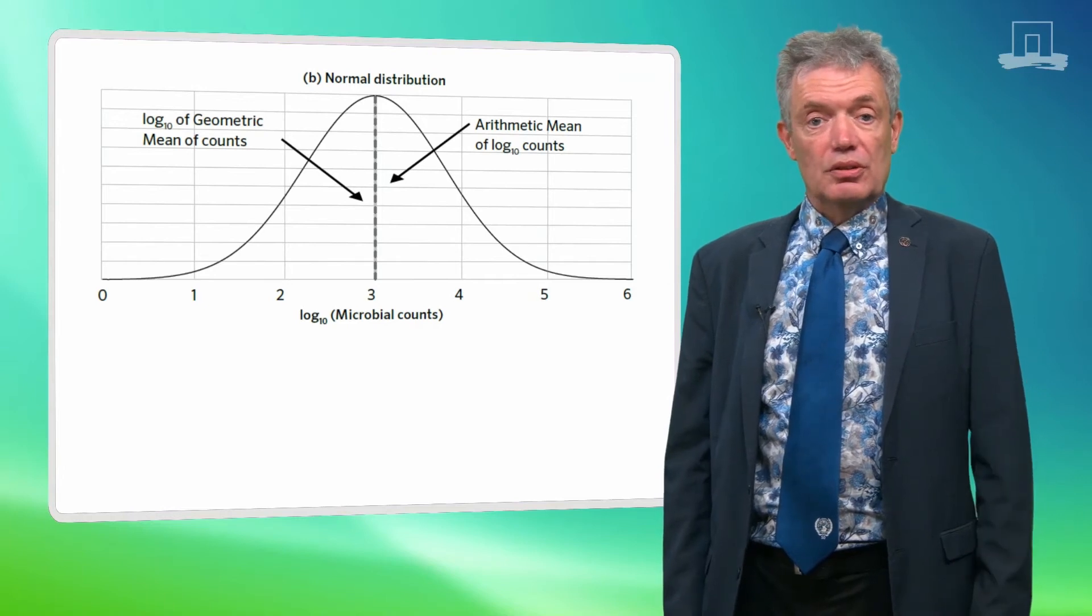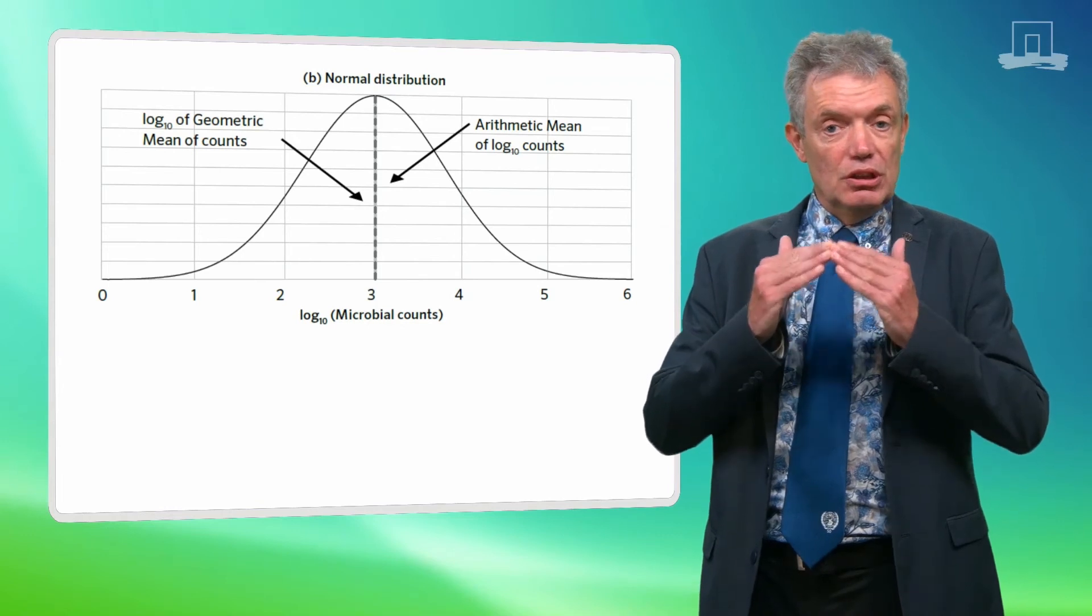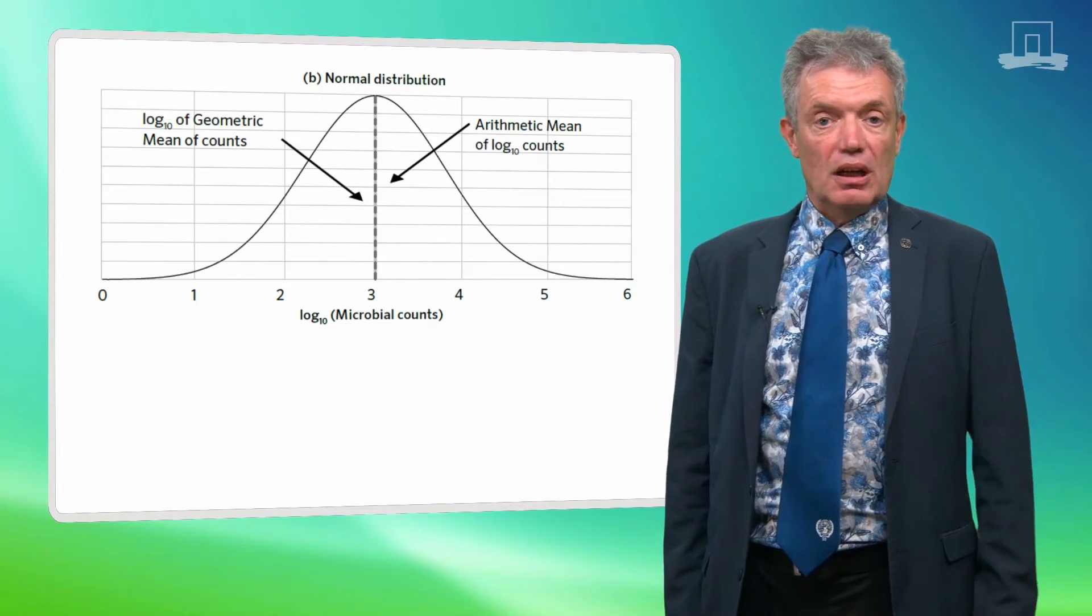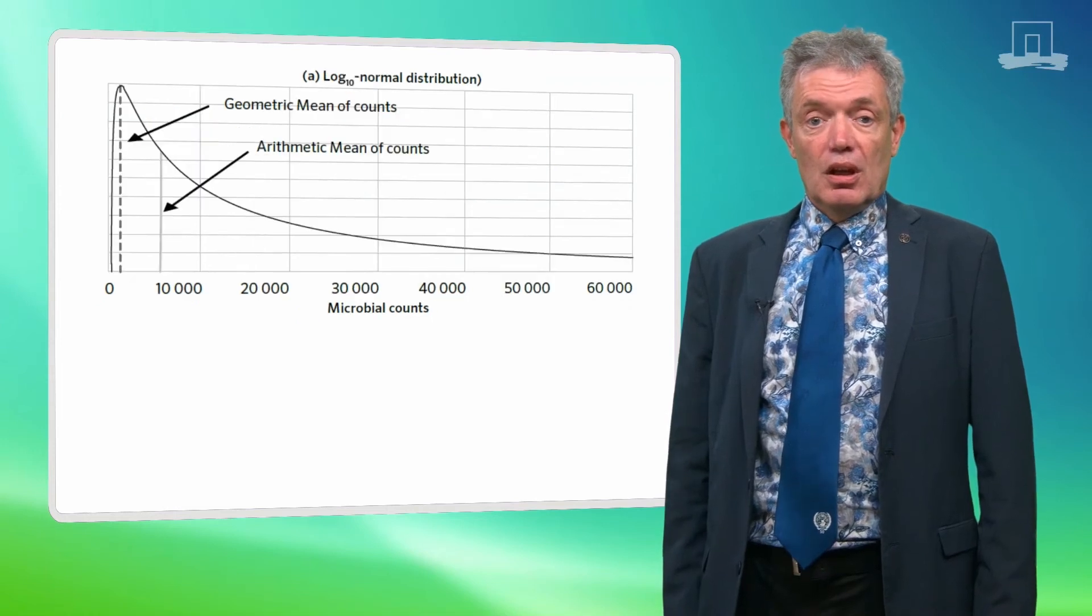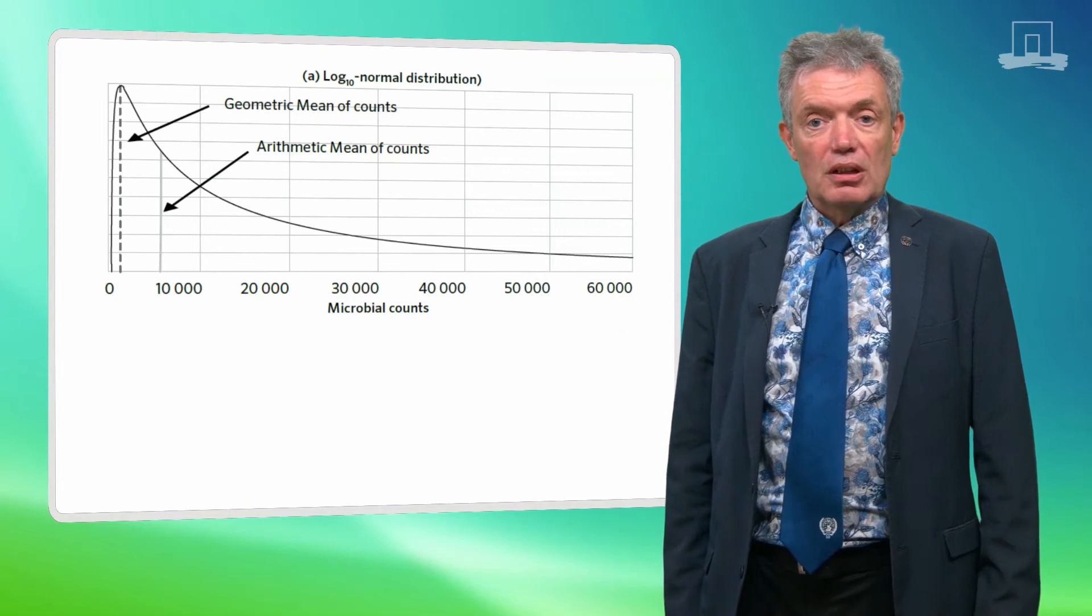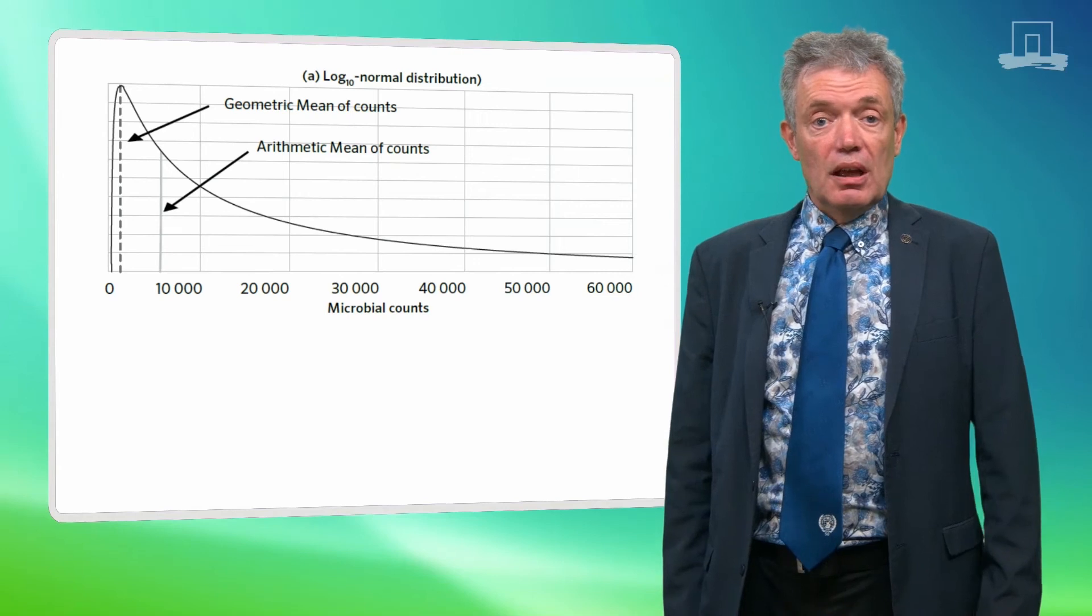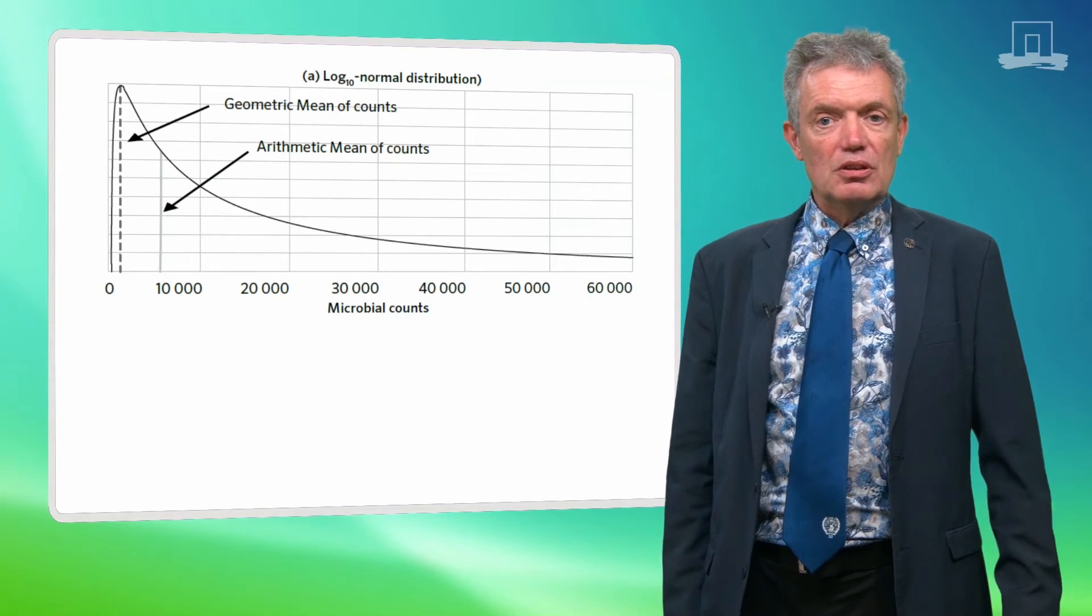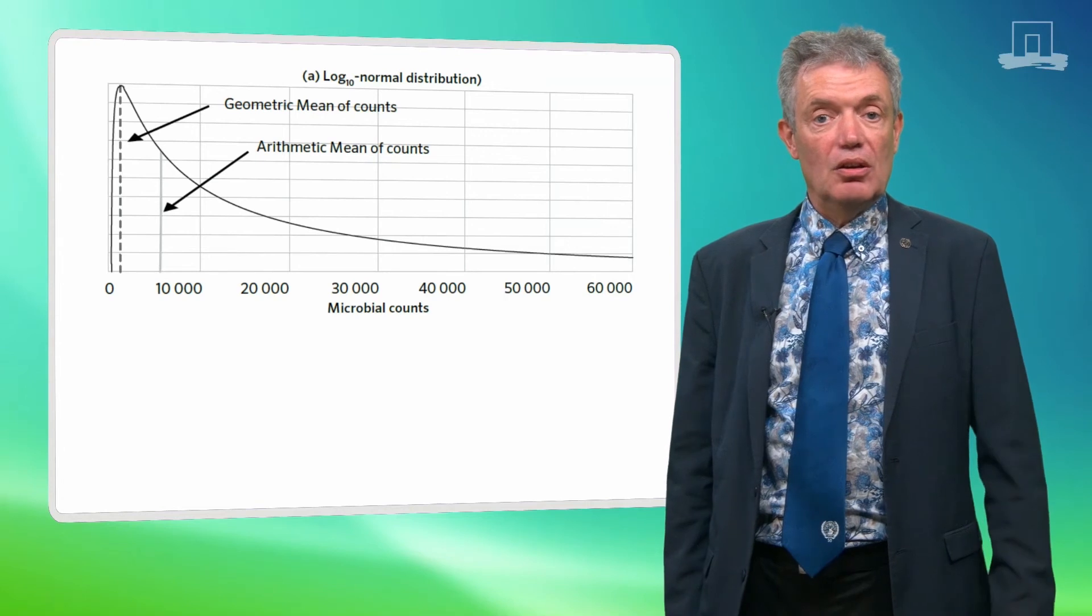If we describe the microbial concentration on a log scale, we get the normal distribution and the peak of this distribution shows the geometric mean. In this graph 3 is the log 10 of the geometric mean of the counts. It is also the arithmetic mean of the log 10 counts. But if we then investigate this on a linear scale, we see that the geometric mean of the counts at the peak of the distribution is very low on the linear scale and underestimates largely the real average counts. The real average of the counts is much more determined by the tail of the curve and is here indicated as the arithmetic mean of the counts.